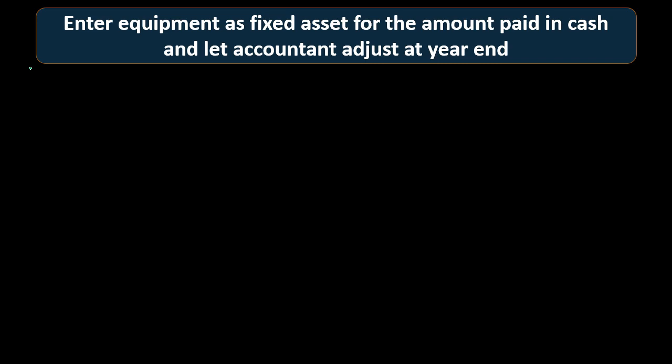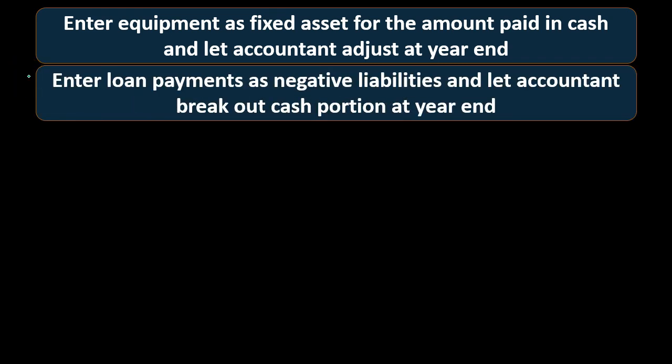We're not going to include the financing, which should be in there. We're going to allow and wait for the adjustment to be made at the end of the year. By doing that, we don't have to deal with putting the loan on the books and the complication of the loan. We can depend on the year-end adjustment for that process, keeping the documentation for the accountant or tax preparer.